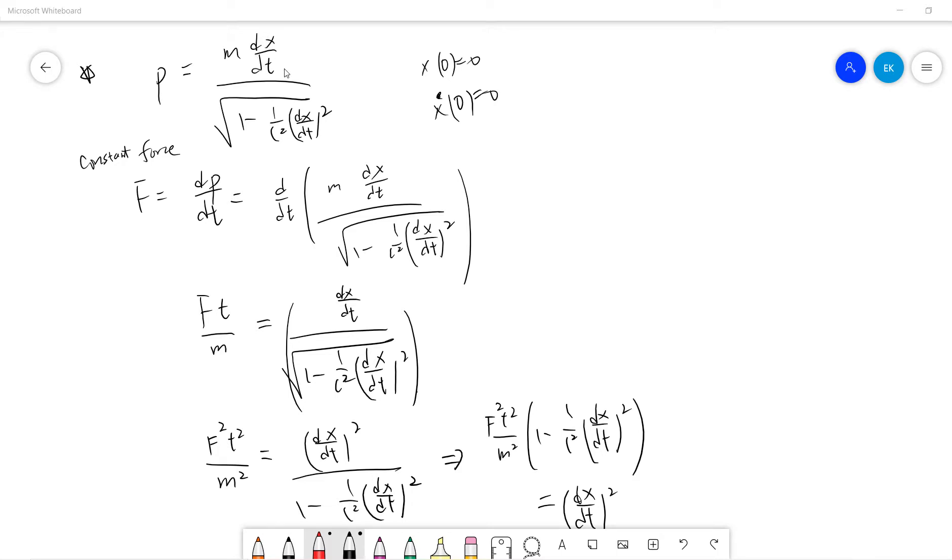So m dx/dt divided by the square root of 1 minus v²/c², which is the square root of 1 minus (dx/dt)²/c². And then let's assume x₀ is 0, ẋ₀ is 0, just for fun. And then there is a constant force.